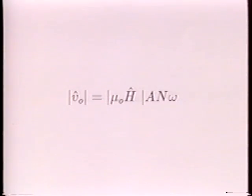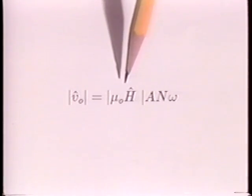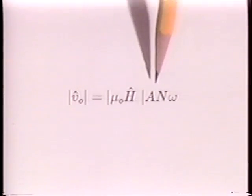Thus, the amplitude of the probe voltage is proportional to the flux density, the average probe area, the number of turns, and the angular frequency.